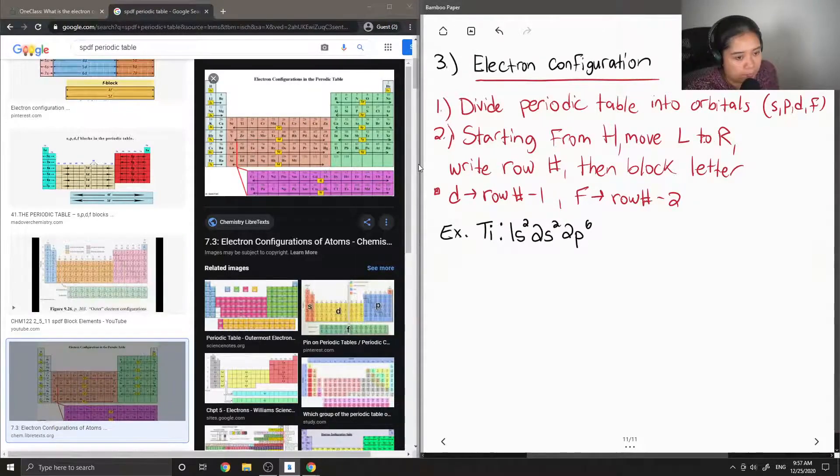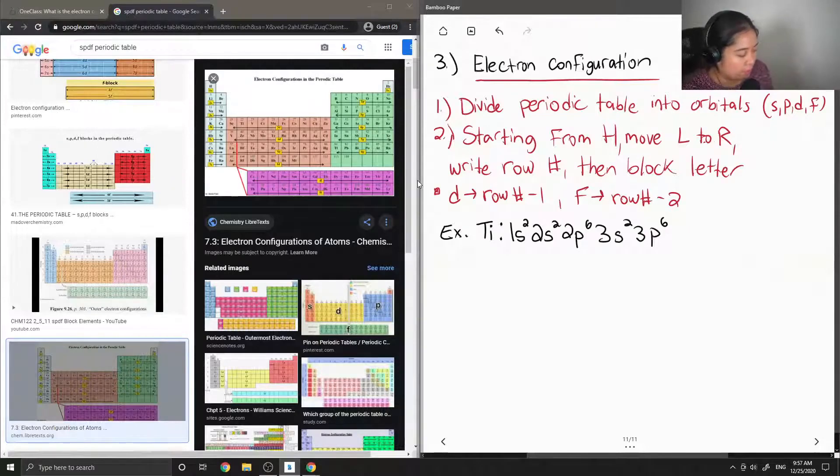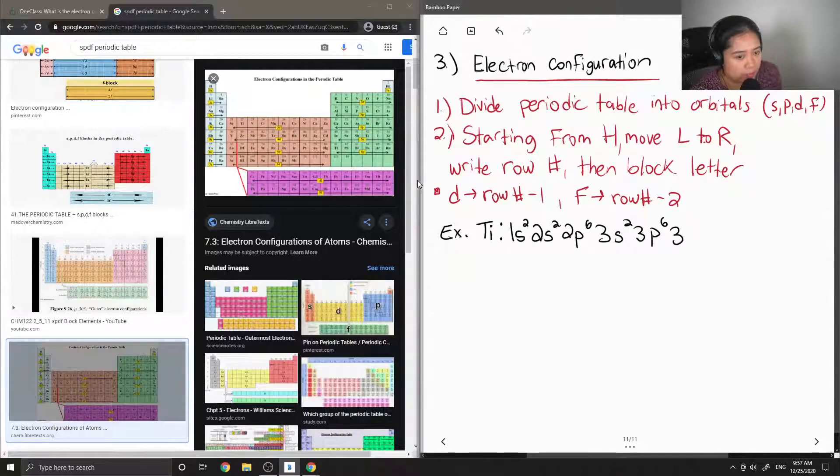And then over to the next row, it's 3s2 and then 3p6, and then moving down, it would be 4s2 and then 3d2. But once we get to the transition metals, it's good practice to write the block letter in order of increasing energy. So I'm going to write the d block first. So 3d up to titanium is two, and then the 4s orbital, which is lower in energy, or higher in energy sorry, is 4s2. So I kind of just switched the two around.